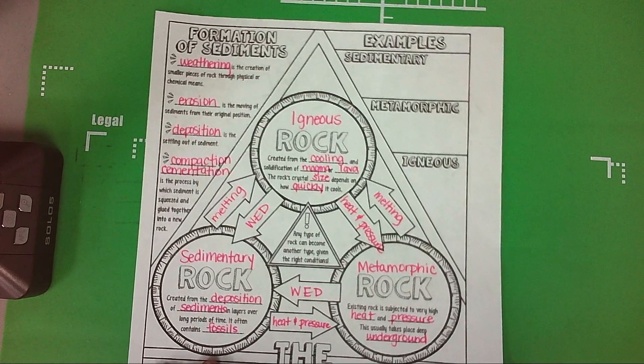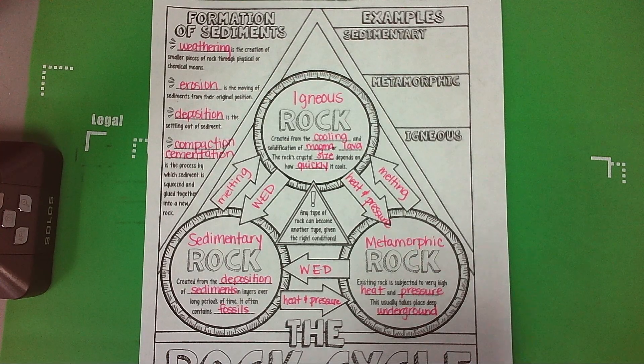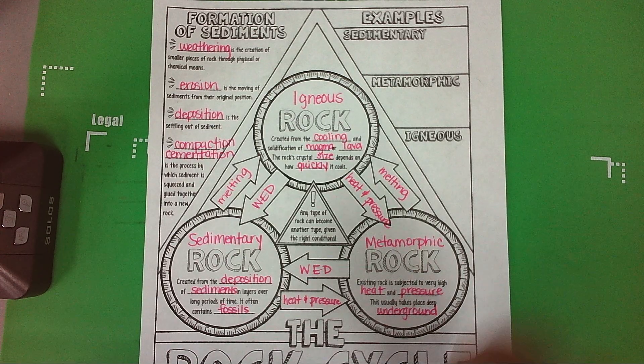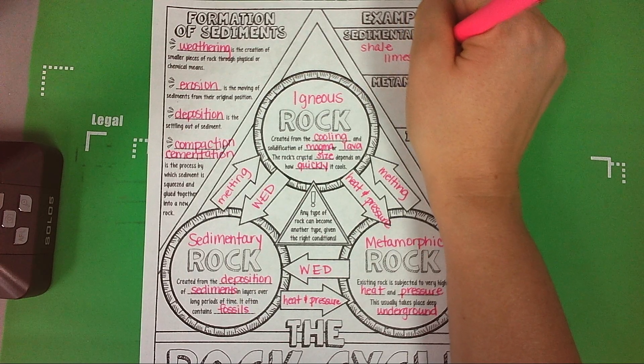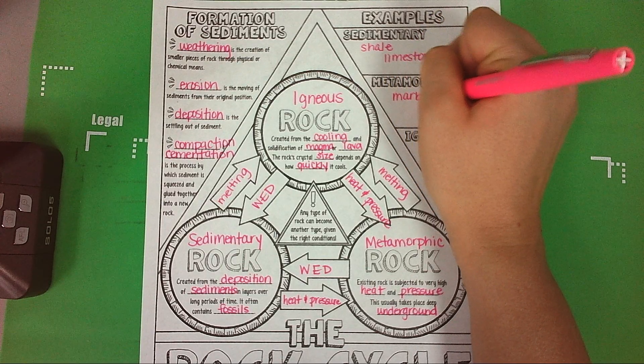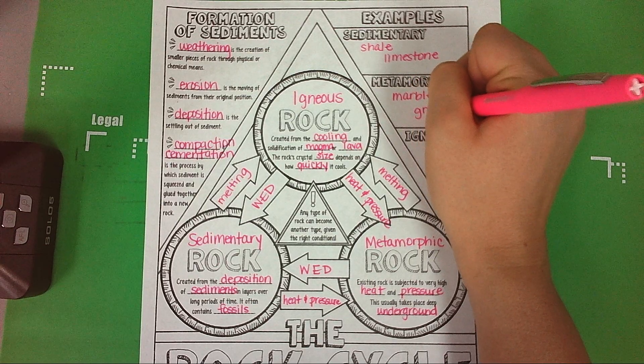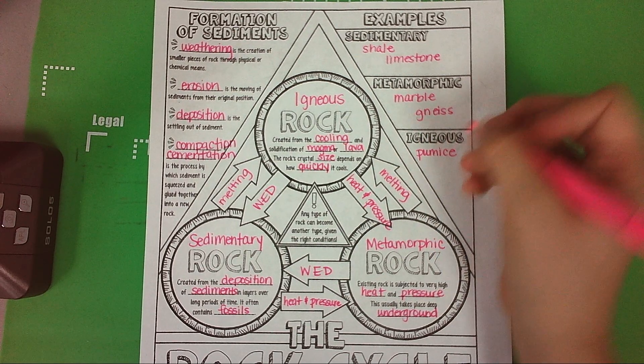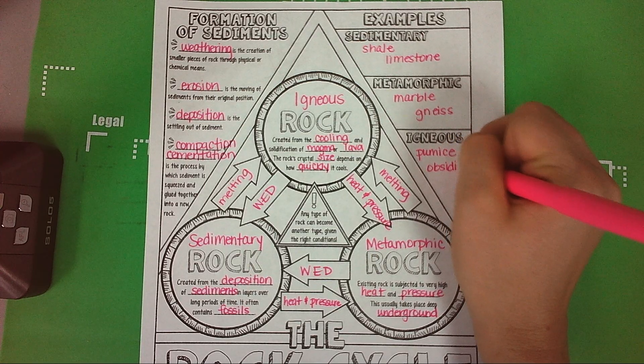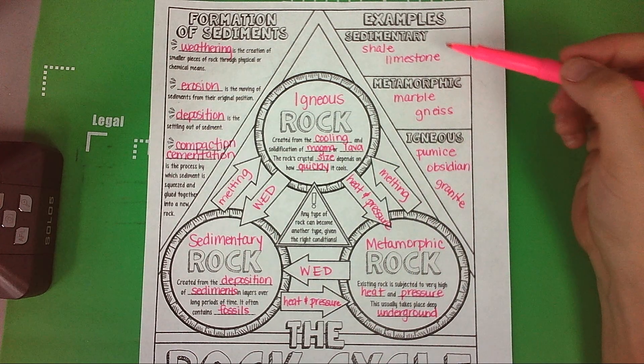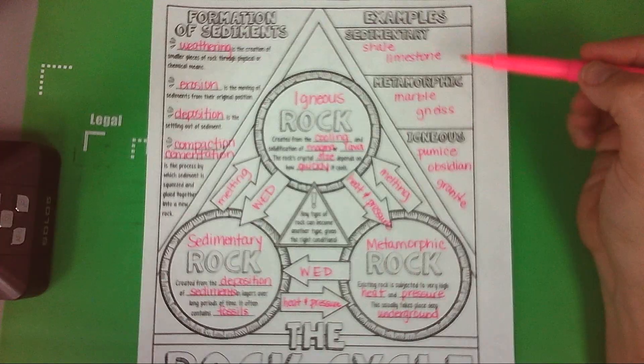Let's go through some examples. Now some of this you may not have heard before, but you're going to see these examples of rocks. Shale is one, limestone is an example of sedimentary rock. Marble and gneiss - pumice is an example of igneous rock, obsidian, and granite.